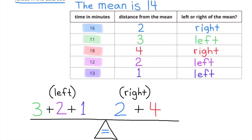On the left-hand side, I'm going to add up the distances away from 14 on the left side of 14. Since 11 is 3 to the left of 14, I'm going to write 3. Since 12 is 2 places to the left of 14, I'm going to write 2. Since 13 is 1 place away from 14 to the left, I'm going to write 1.